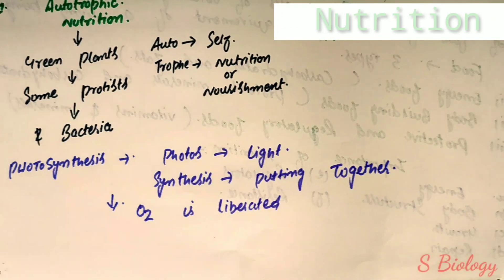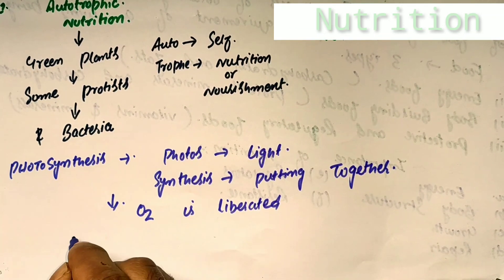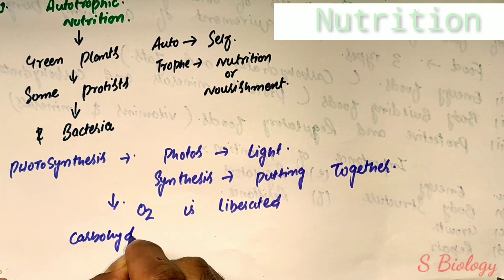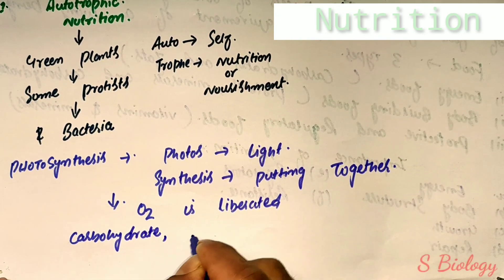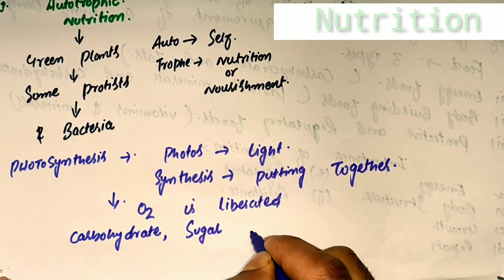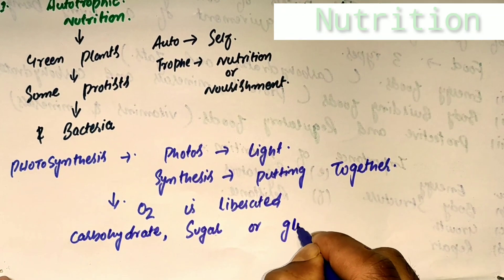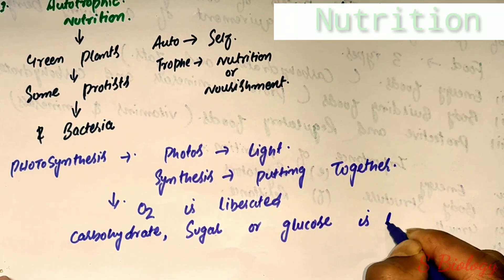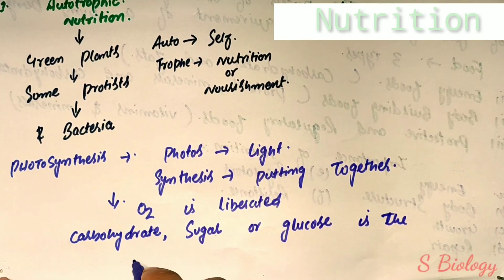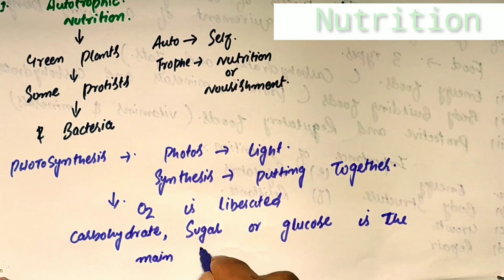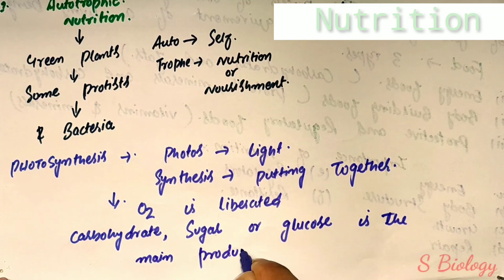There are some major events in photosynthesis. First: absorption of solar energy by chlorophyll. Second: conversion of solar energy into chemical energy and utilization in splitting water into hydrogen and oxygen. Third: reduction of carbon dioxide to form carbohydrates and other components of organic food.